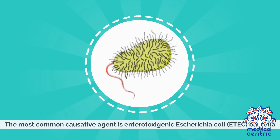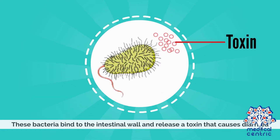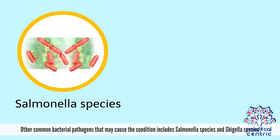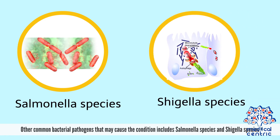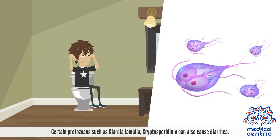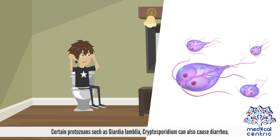These bacteria bind to the intestinal wall and release a toxin that causes diarrhea. Other common bacterial pathogens that may cause the condition include Salmonella species and Shigella species. Certain protozoans such as Giardia lamblia and Cryptosporidium can also cause diarrhea.